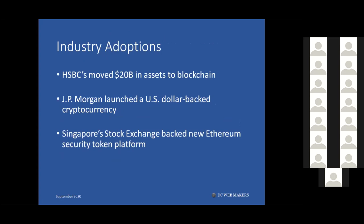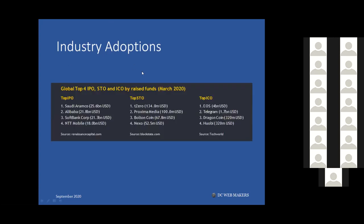Now let's talk about asset tokenization adoptions. If you search online for HSBC and asset tokenization, you'll see they've been moving their debts and selling some assets — especially debt — into tokenization. They've been working on this for about four years now. Singapore Stock Exchange has allowed security token platforms. JP Morgan has also offered cryptocurrency. The graph shown here illustrates top IPO, STO, and ICO fundraising happening in 2020.